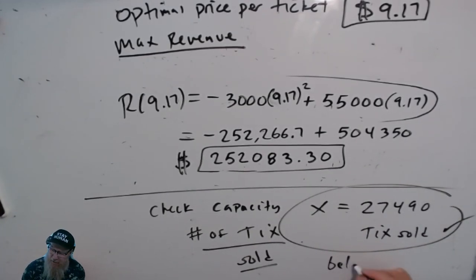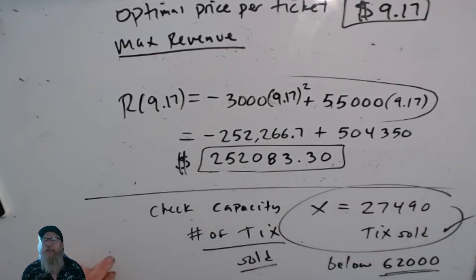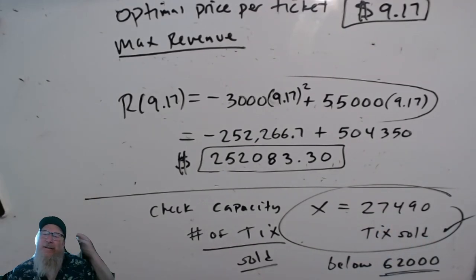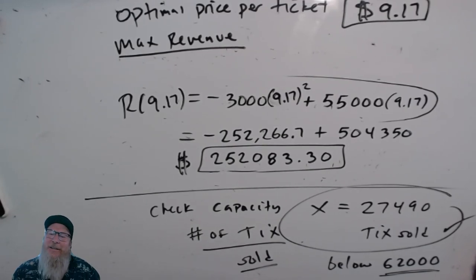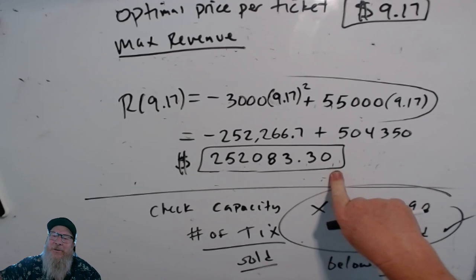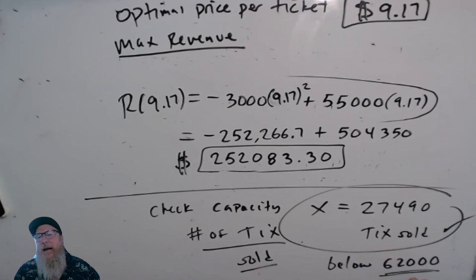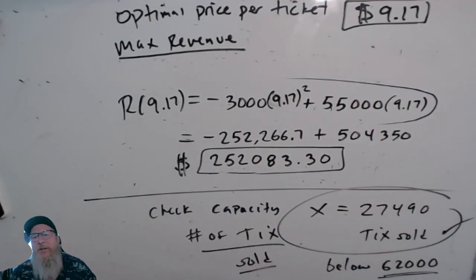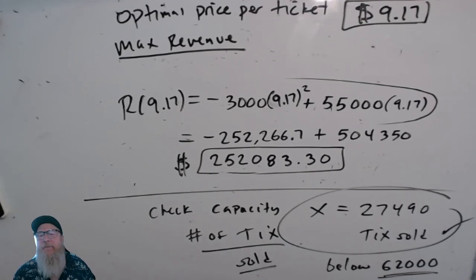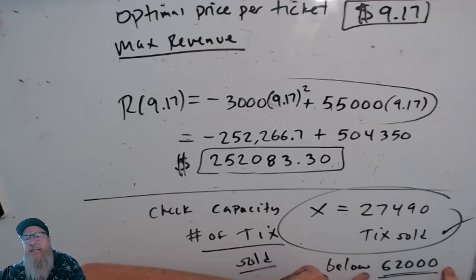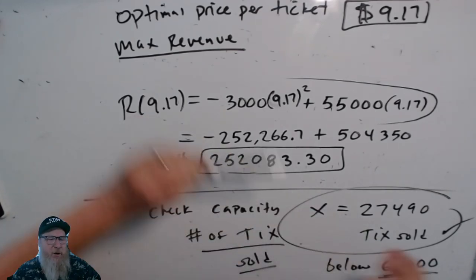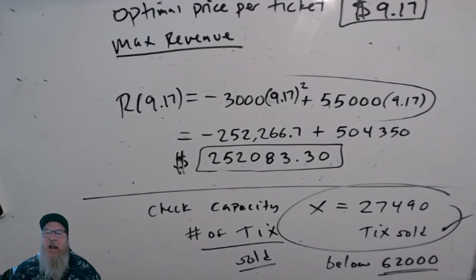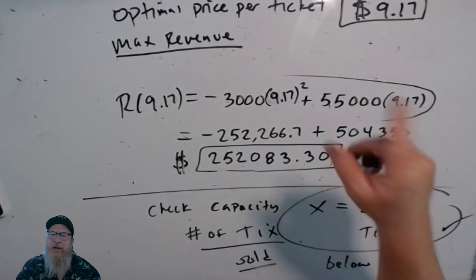To check your answer, find the number of tickets sold by dividing revenue by price: approximately 27,490 tickets sold, which is well below the 62,000 capacity. It's actually only half full, which seems odd for maximum revenue, but those are the numbers the model gives. The optimal price is $9.17 and maximum revenue is approximately $252,000. Until we meet again, I'm Dr. J and I'll see you on the internet.